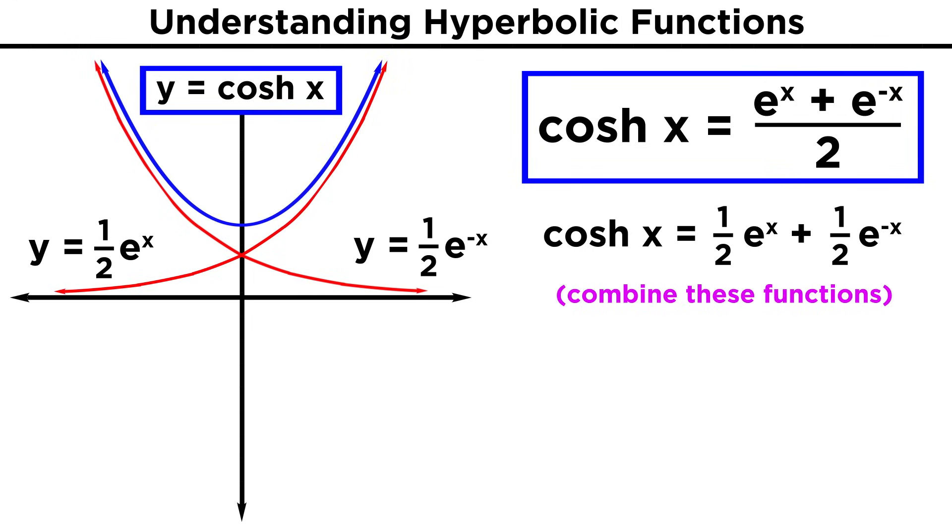That means that the part of the hyperbola that was below the x axis is now above it, and if we add up these curves, we get hyperbolic cosine, which will look a bit different.